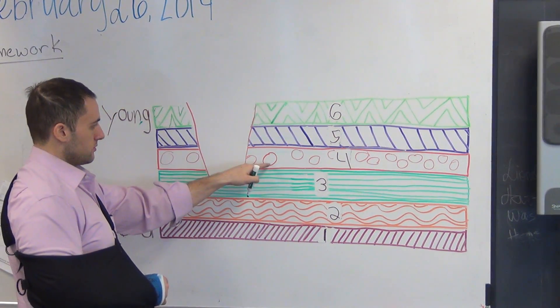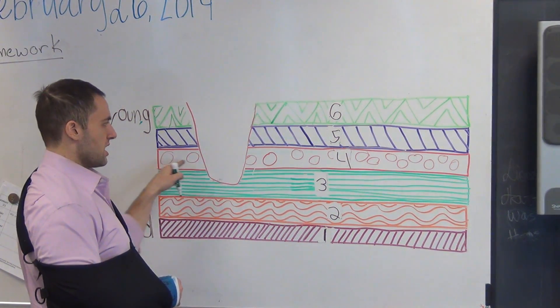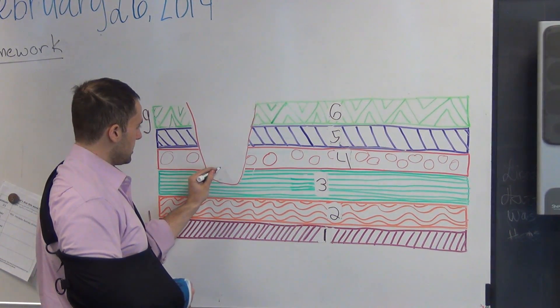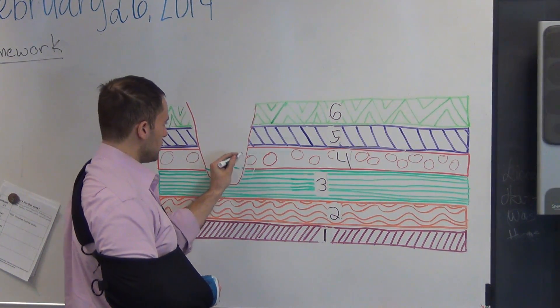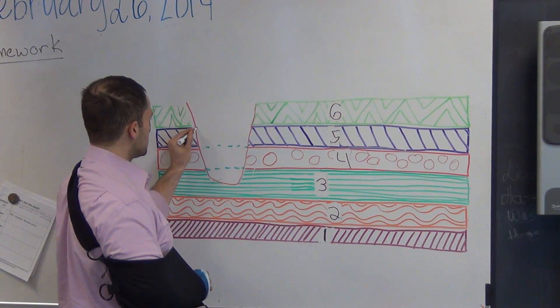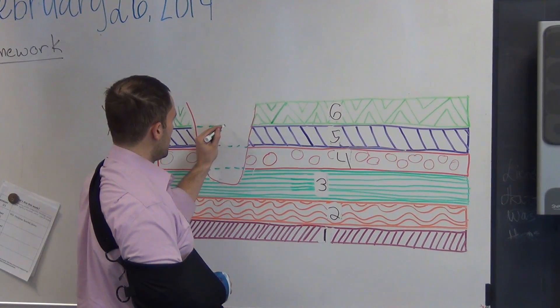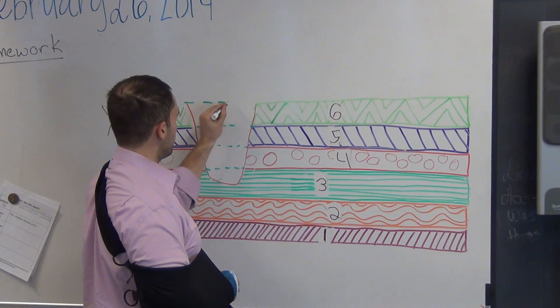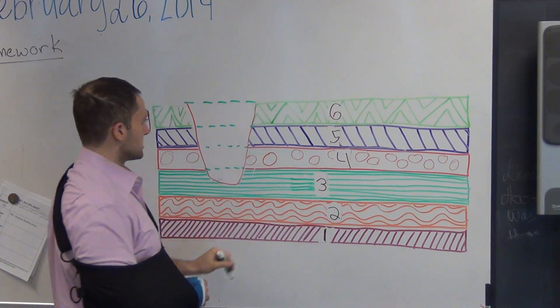Even though there is no more whatever this actual rock layer might be, we can still look at it and say it used to be there because the law of original horizontality says that everything was deposited as a nice, even, flat, horizontal layer.